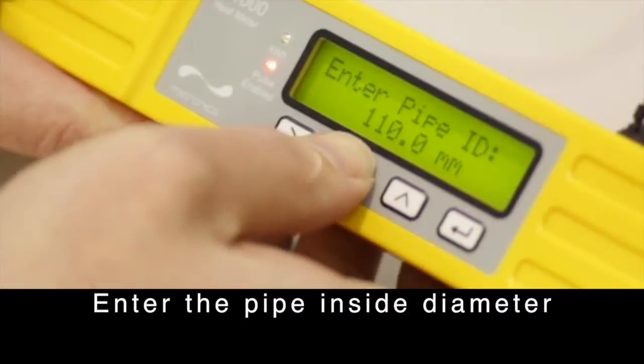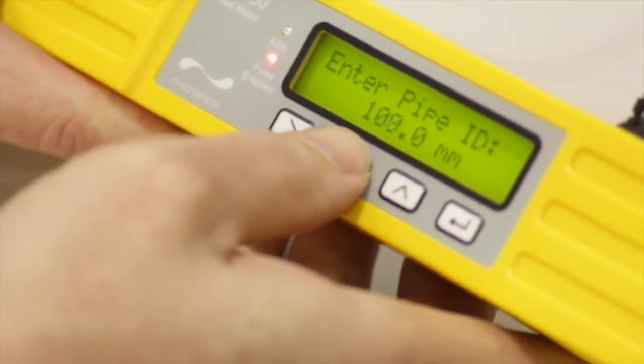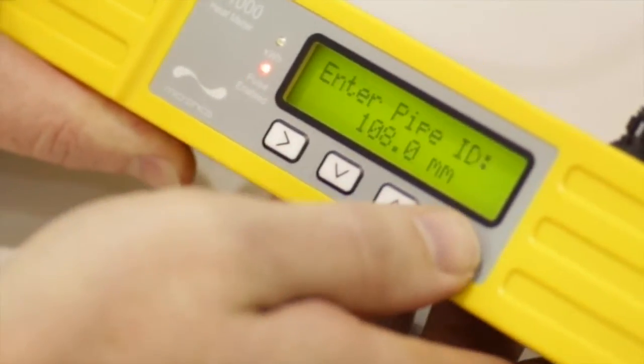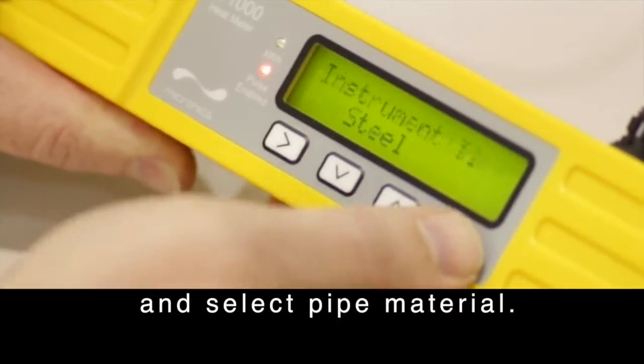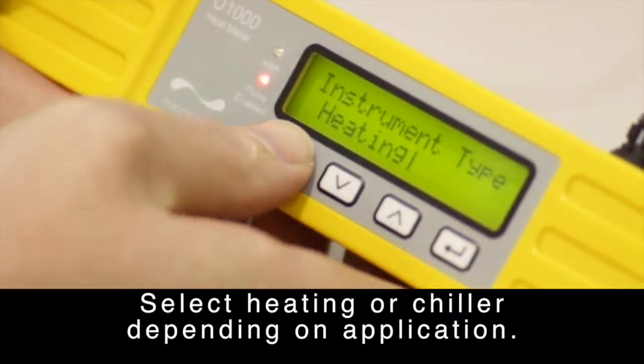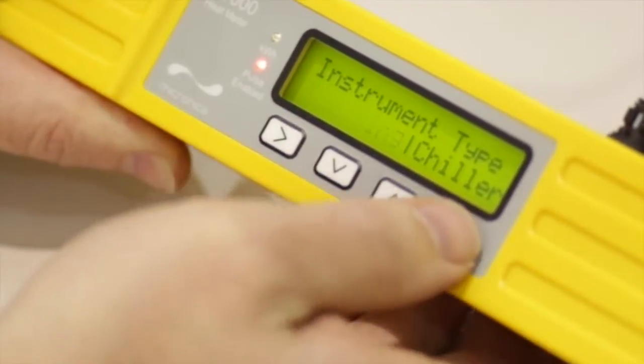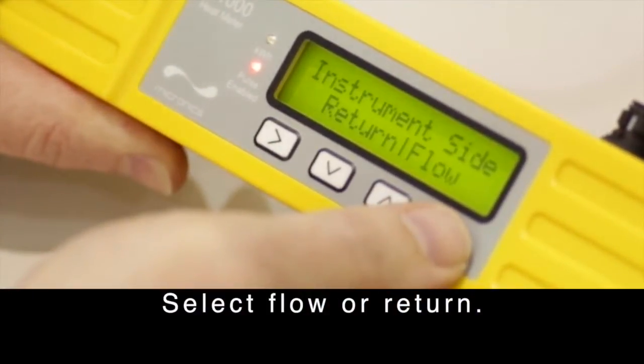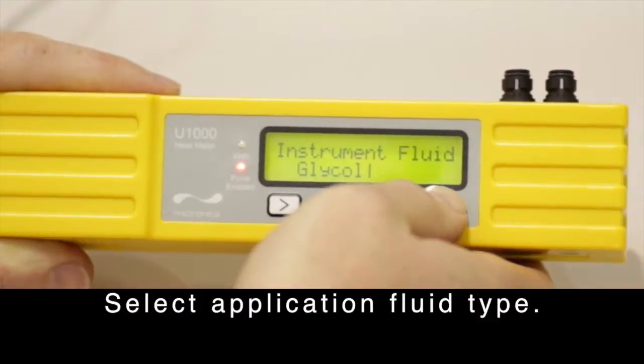Enter the pipe inside diameter and select pipe material. Select heating or chiller depending on application. Select flow or return. Select application fluid type.